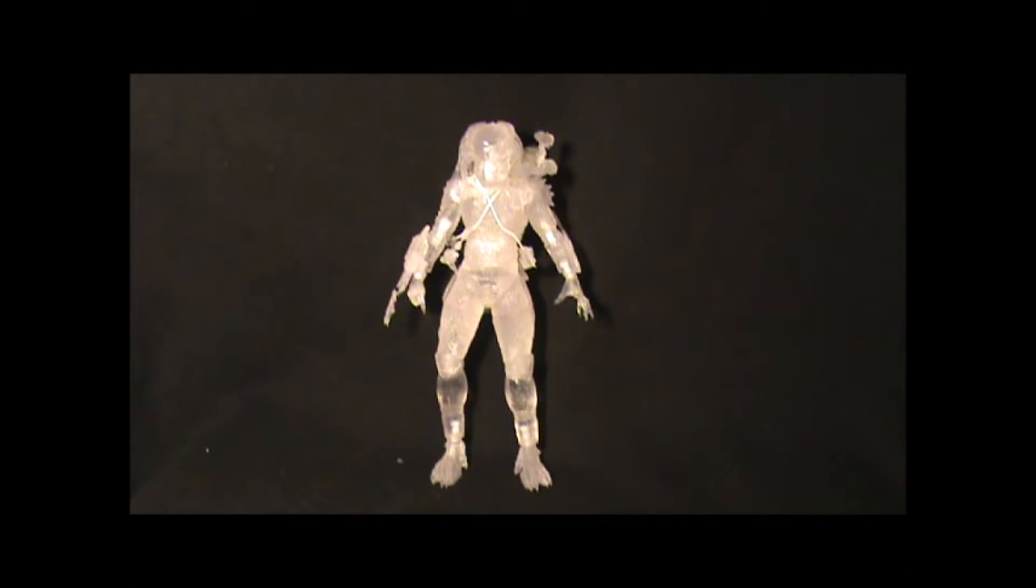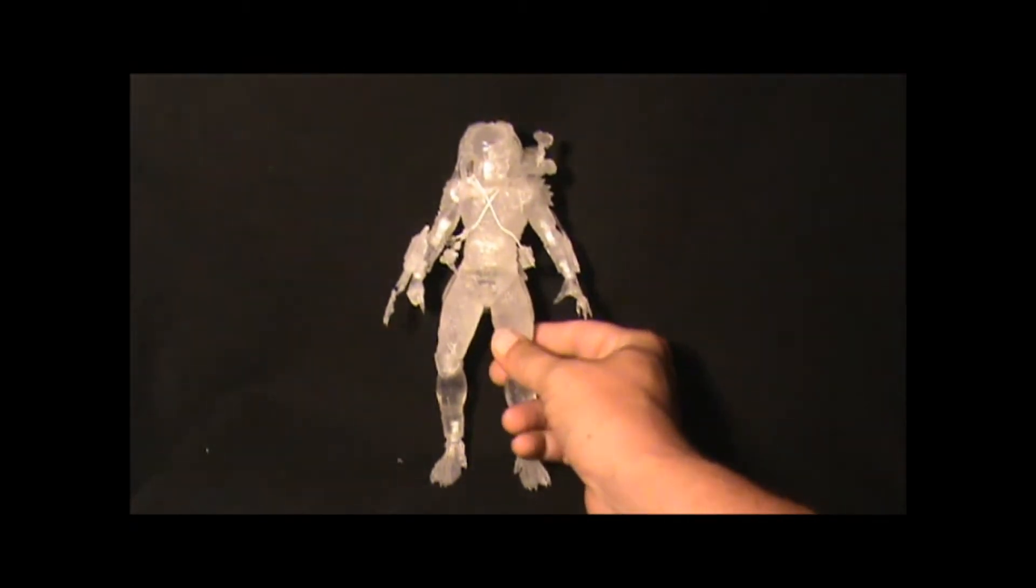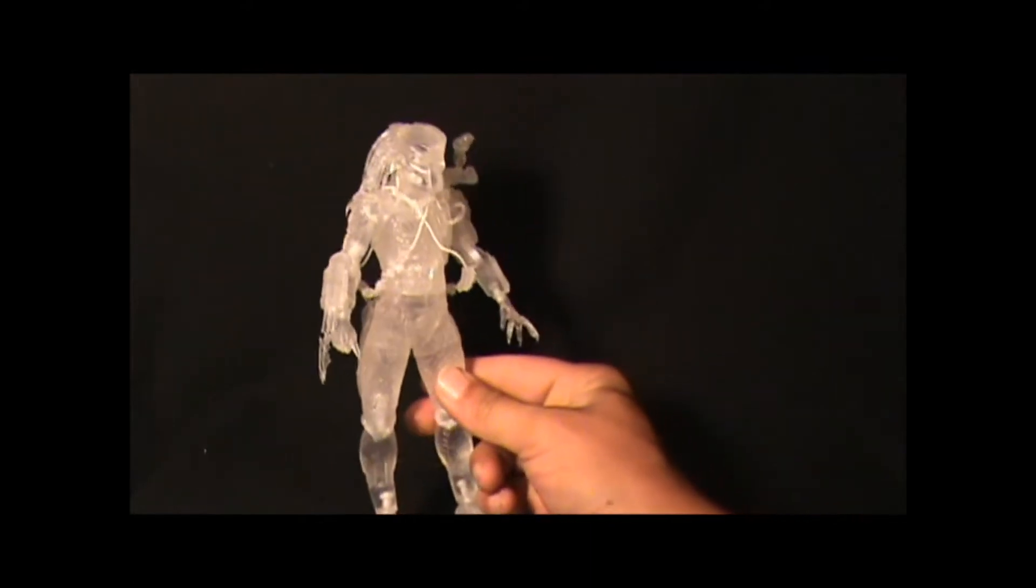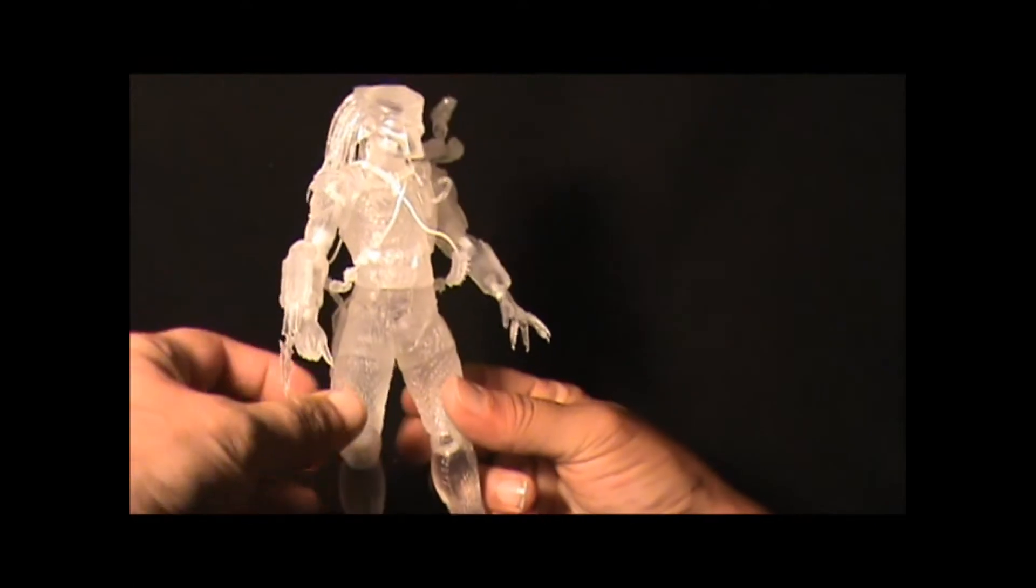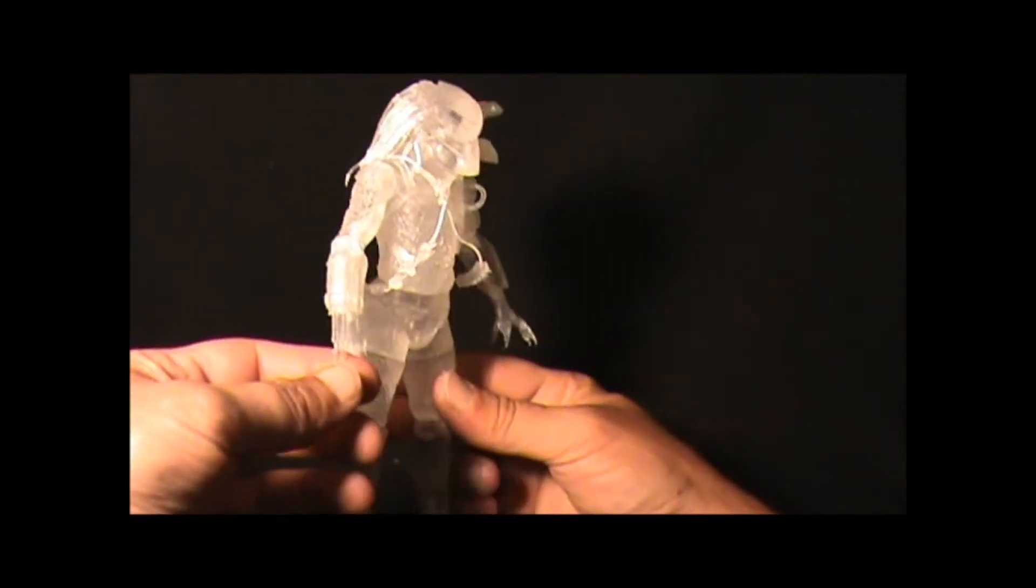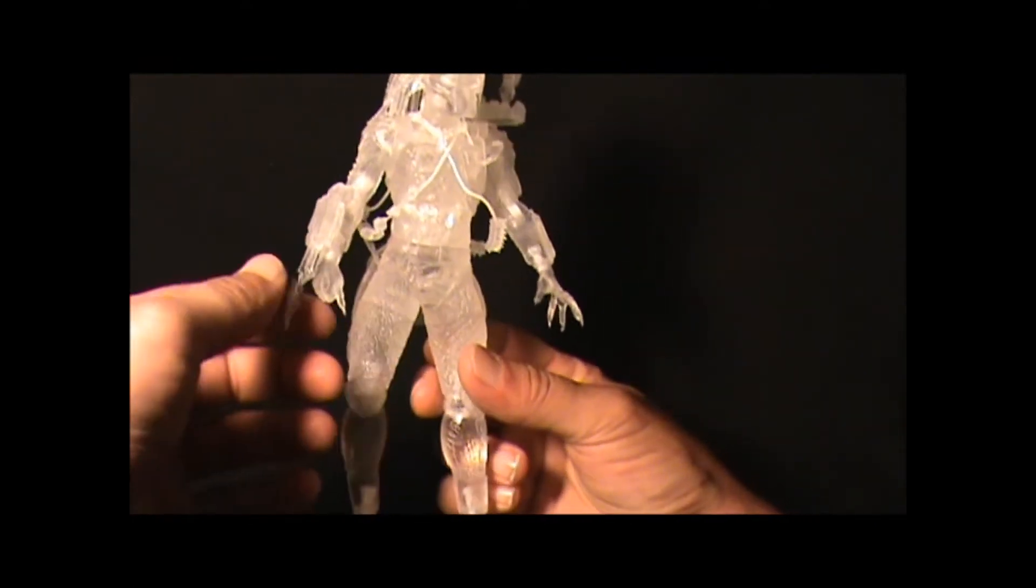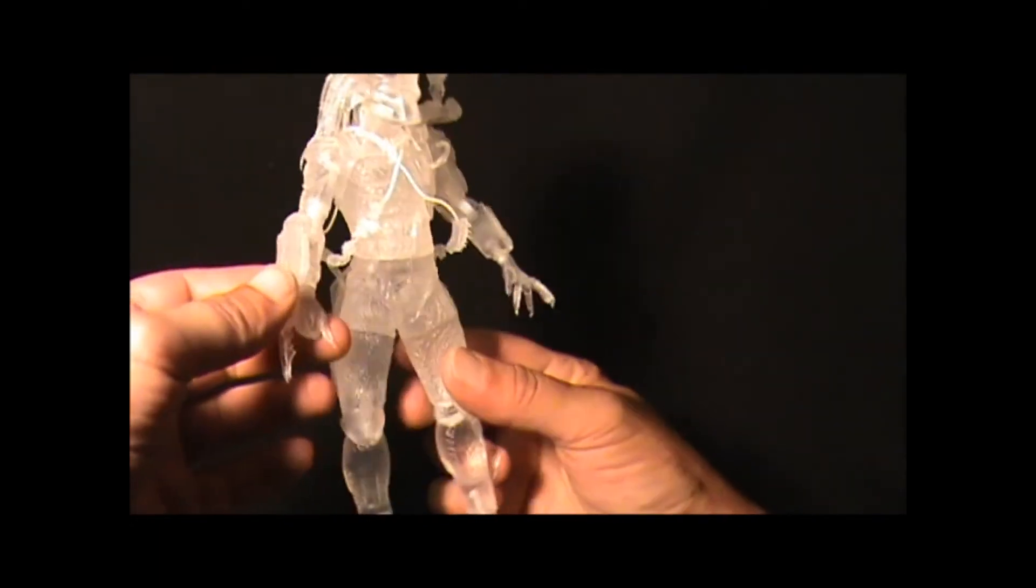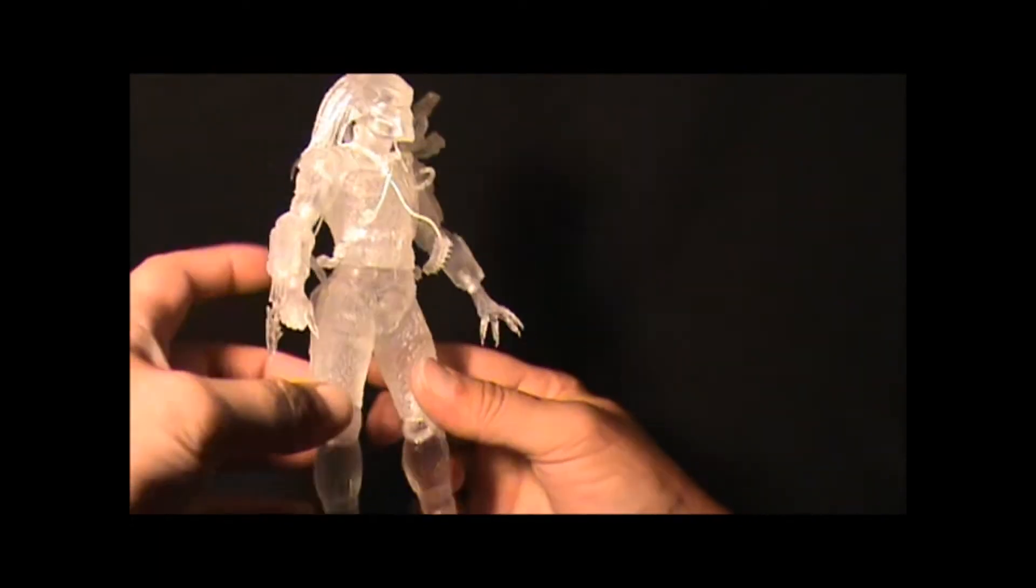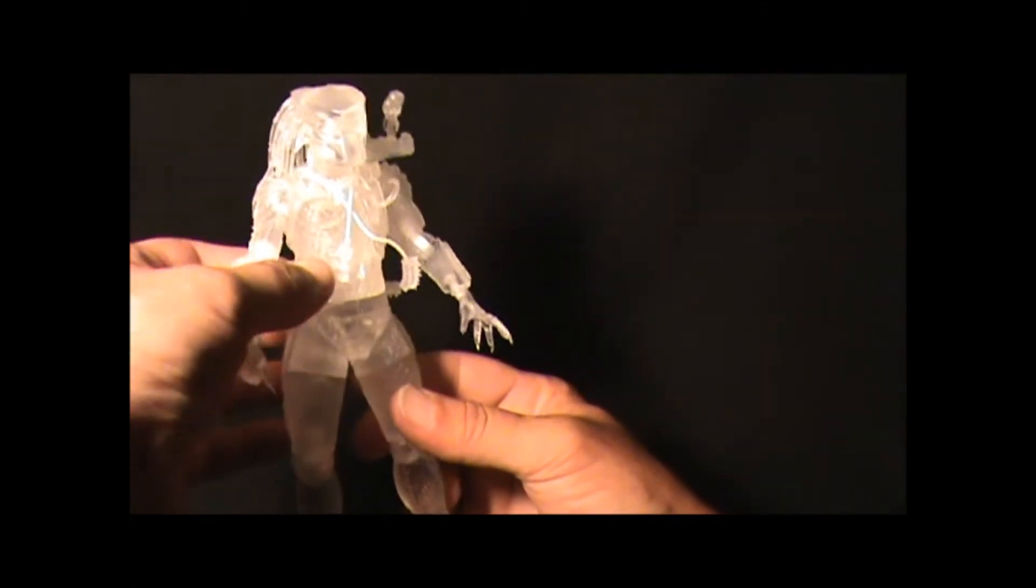Okay we got him out of the box. Look at this guy man, wow, look at the detail. I mean this is really wicked. As you can see it's got the known Predator wrist blades. He's got his trophies, his little trophy necklaces.